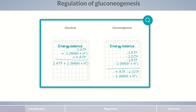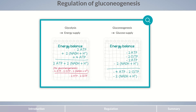In gluconeogenesis, the body invests four molecules of ATP, two GTP, and two NADH and H-plus. If this expenditure is included in the energy balance for glycolysis, it becomes rapidly clear that the breakdown of the glucose produced by the body isn't an energy-efficient process. Gluconeogenesis isn't carried out to counteract energy deficiency, like glycolysis, but to compensate for glucose deficiency.